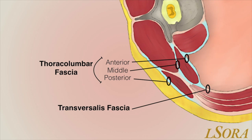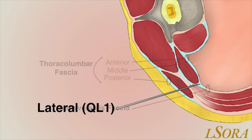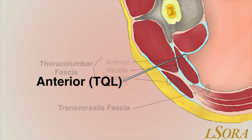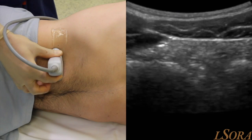Anterior to QL lies the anterior thoracolumbar fascia, which is continuous with transversalis fascia and runs up over psoas major. At the posterior aspect of the QL muscle lies the middle thoracolumbar fascia. An injection at the lateral aspect of the QL muscle was previously termed the QL1 block or the lateral quadratus lumborum block. An injection at the posterior aspect between QL and erector spinae is called the posterior or QL2 block. An injection at the anterior aspect between QL and psoas major has been termed the transmuscular quadratus lumborum block, or the tequila block.